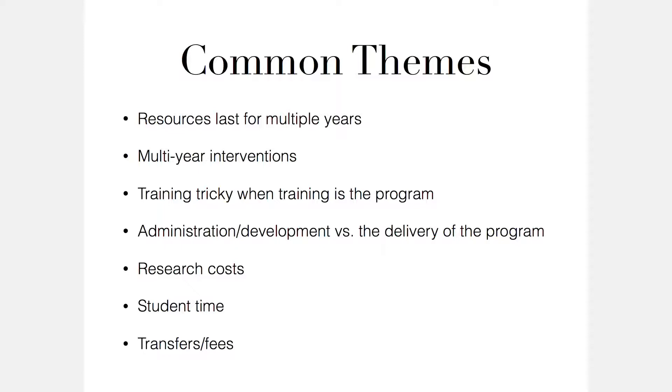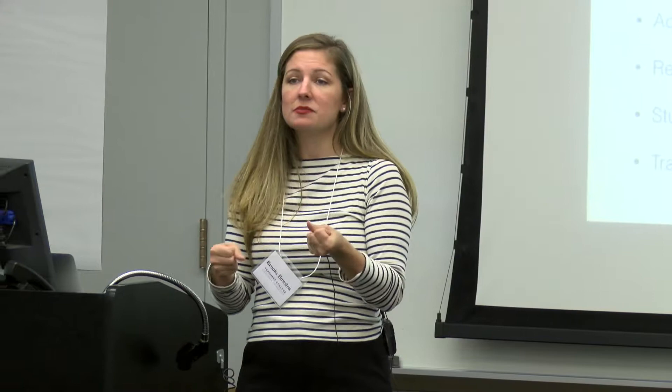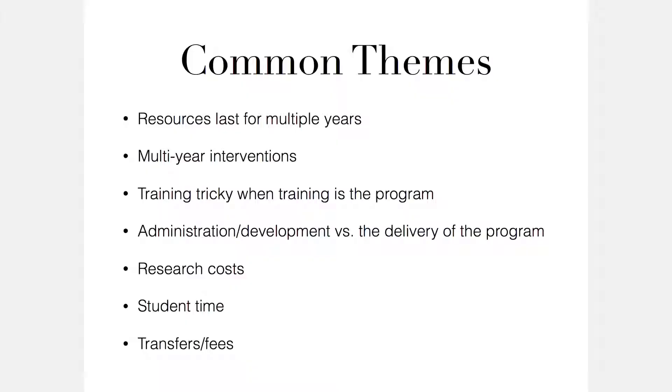We also might have multi-year interventions — where it's not just in and out in six weeks. We might have something where we're treating the same students for three years, or maybe it's a three-year program where we see different students every year. So we want to think about that as we move into tomorrow when we're starting to think about calculating costs and pricing — how we think about both a resource that lasts longer than what we're using it for and an intervention that lasts longer than a year.